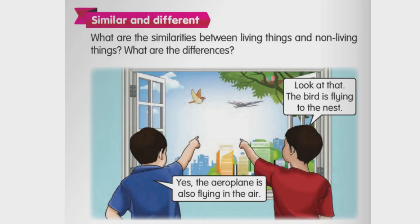Moving on to the next slide. We are looking at similarities and differences between living things and non-living things. The two boys on the screen are talking about a bird and an aeroplane. Both the bird and the aeroplane can fly — these two things can move. Does it mean that these two objects are living things?